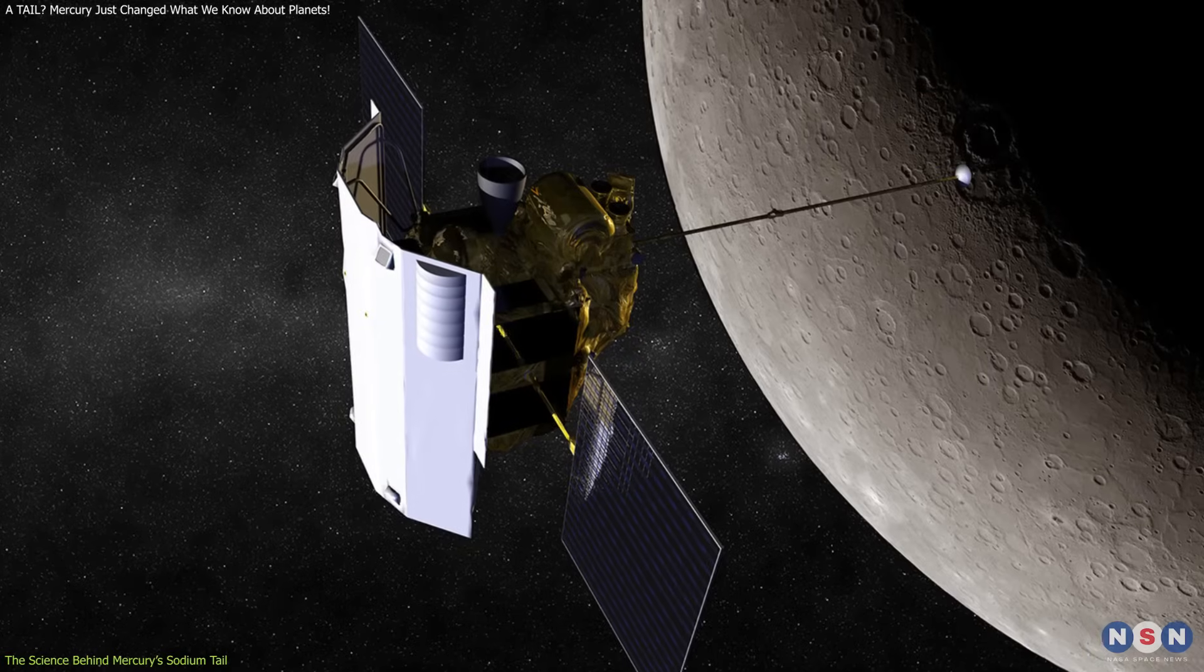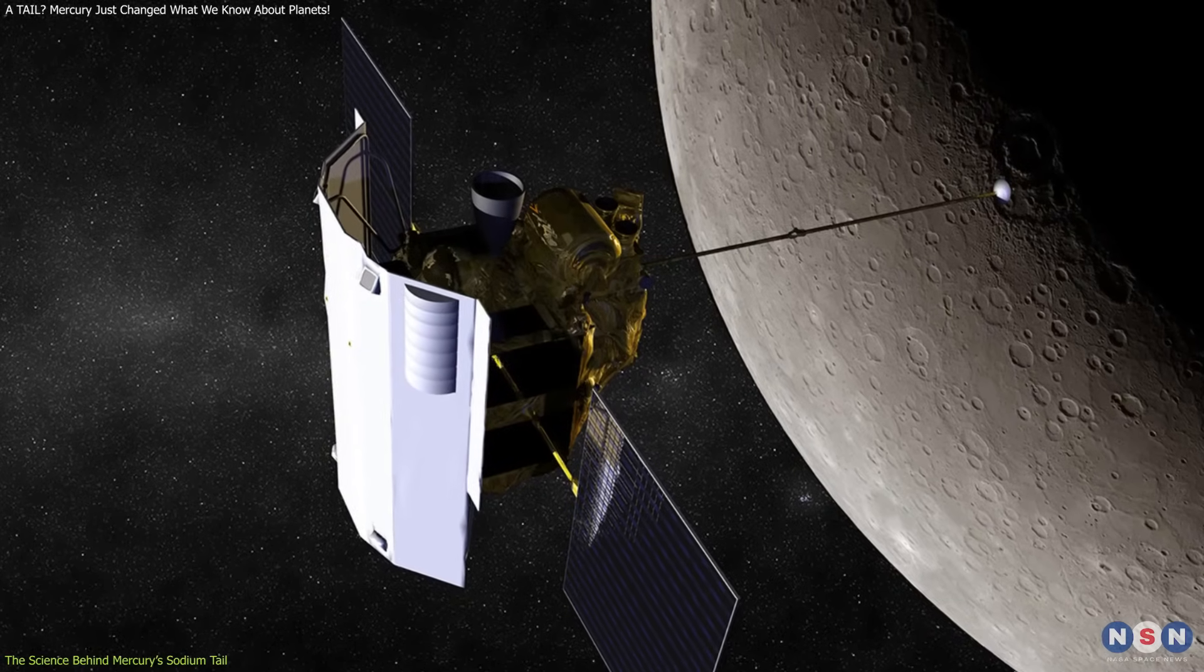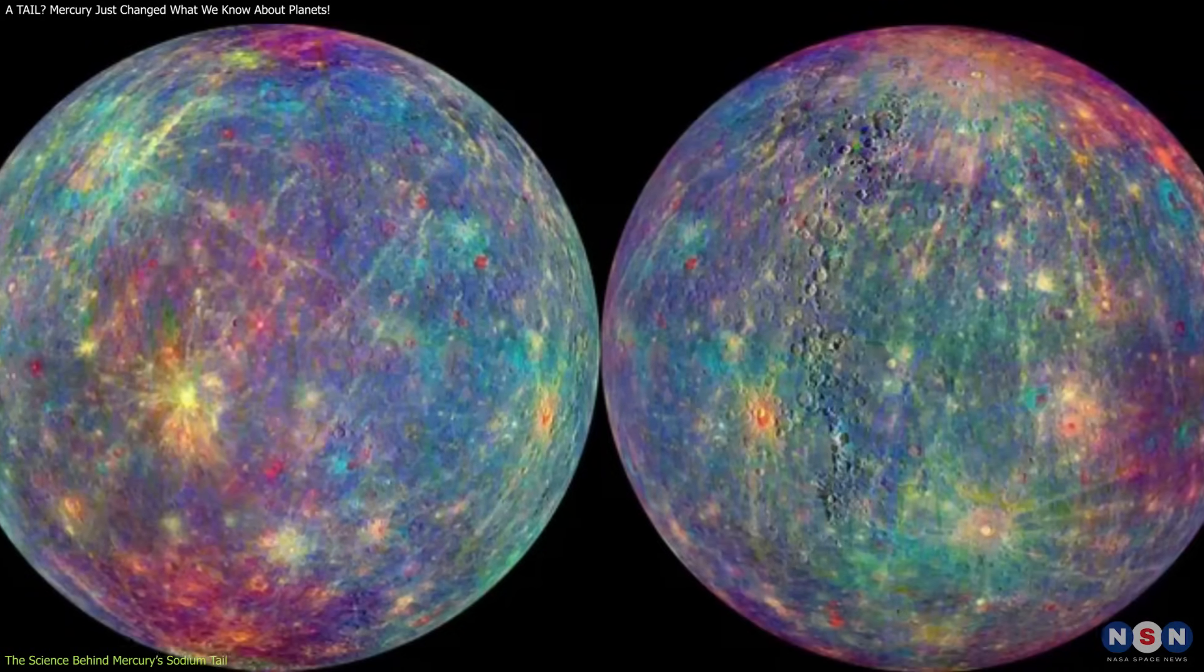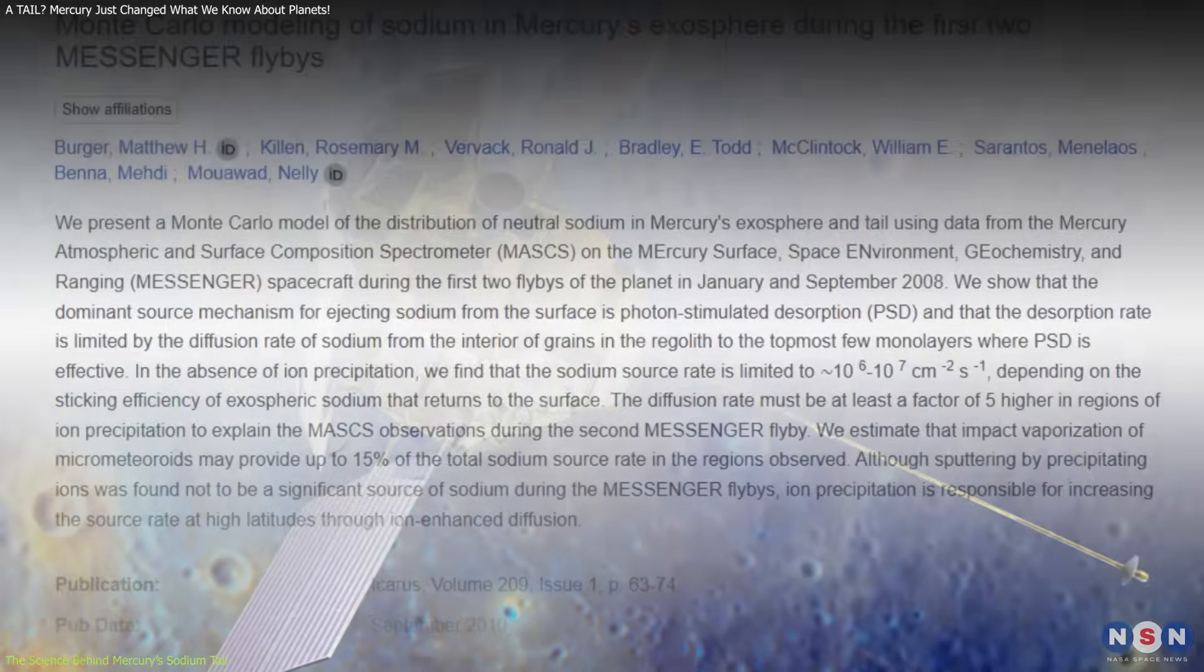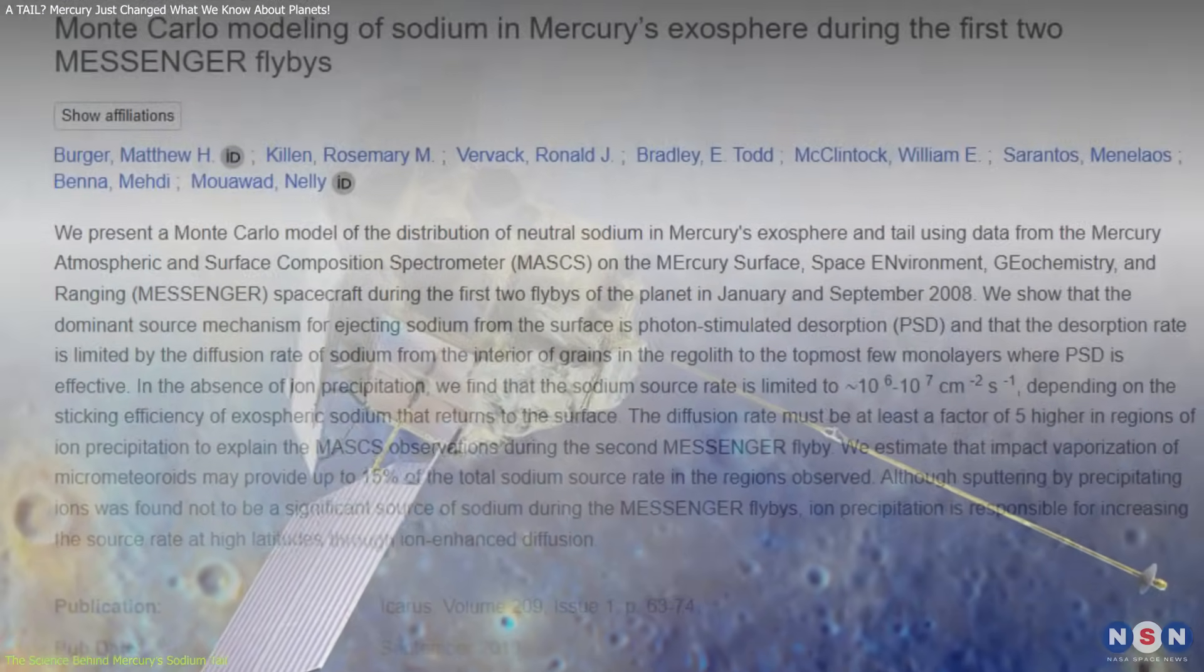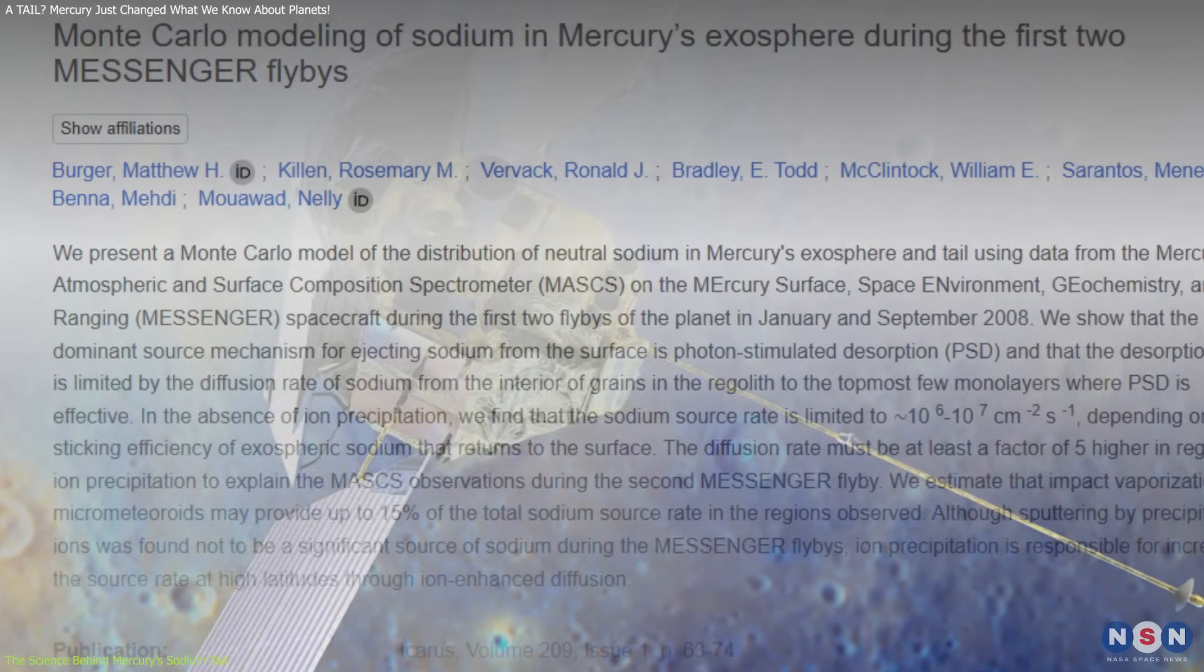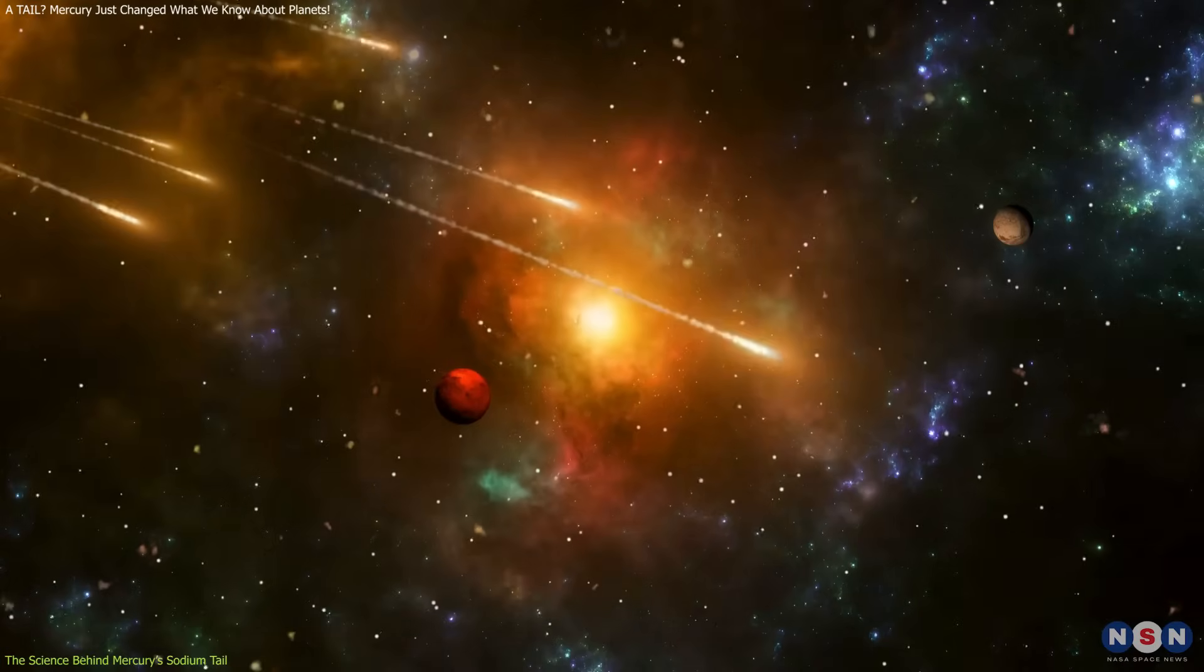NASA's Messenger spacecraft, which orbited Mercury from 2011 to 2015, collected extensive data about the planet's exosphere and helped scientists understand this mysterious tail. Messenger confirmed that sodium emissions vary not only with solar radiation, but also with the density of micrometeoroid impacts, especially during known meteor streams.